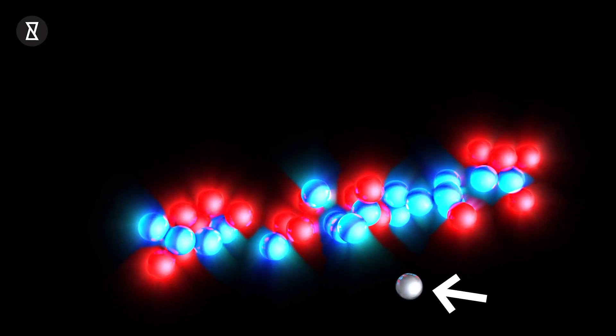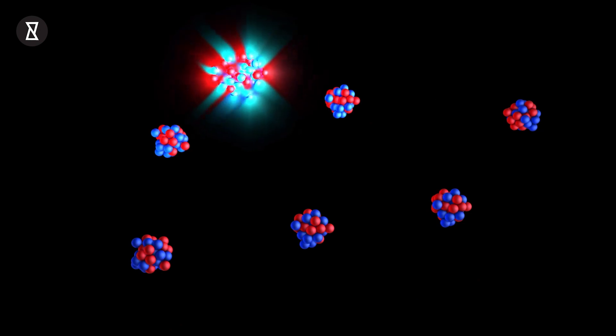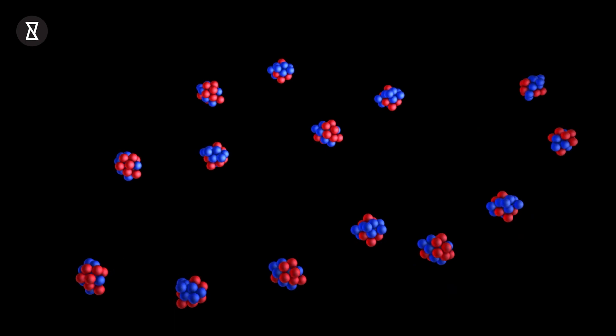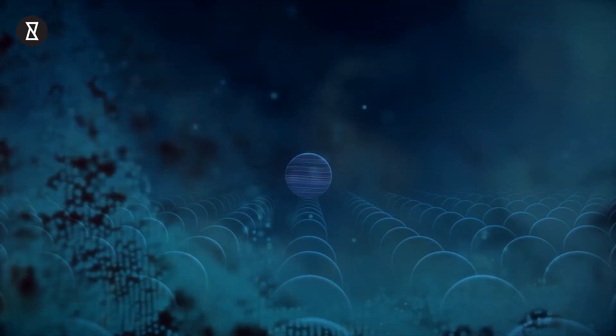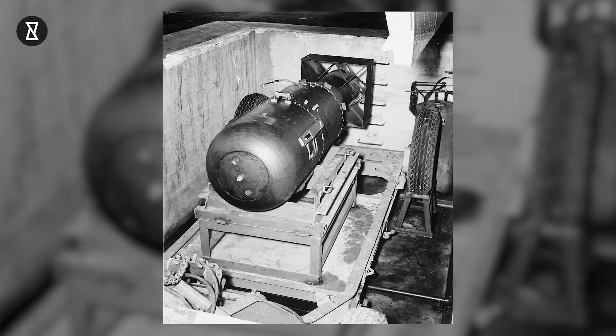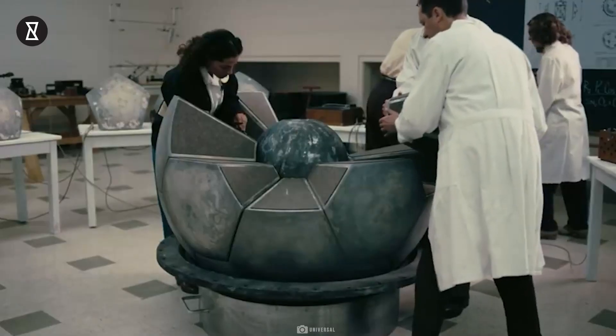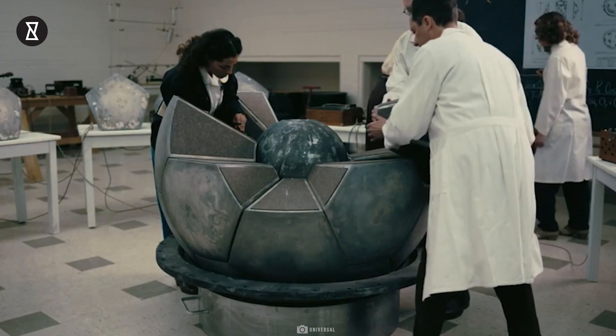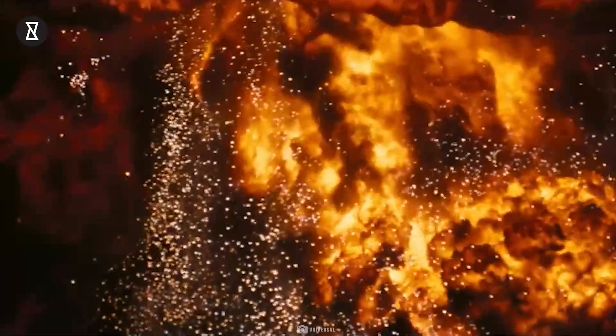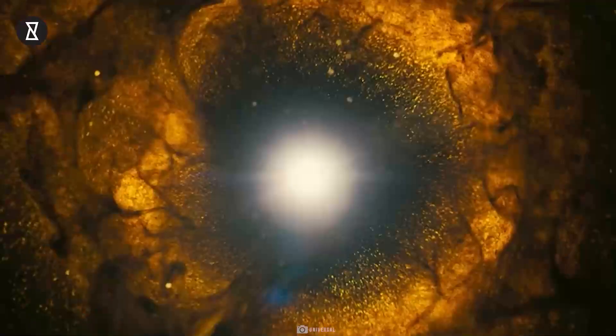When uranium unstably splits, it releases a neutron. And that neutron goes ahead and splits another atom. Then another. Then more. Going one, then two, four, then eight, and then sixteen. Leading to an out of control chain reaction. That's what an atomic bomb is. It contains an isotope of purified uranium, crammed together to initiate a reaction using a trigger, causing a tremendous release of energy. Instantaneously.